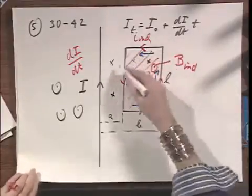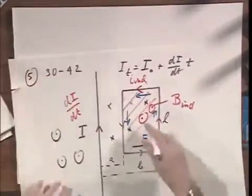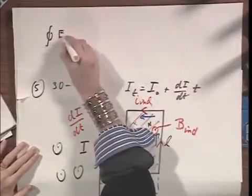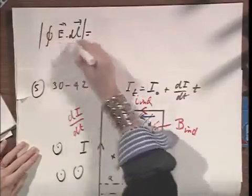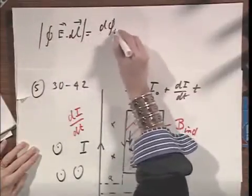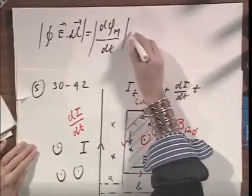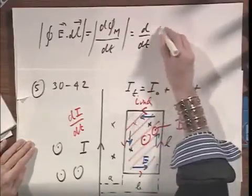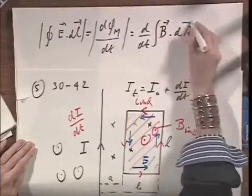To calculate the change of the magnetic flux, we have the closed-loop integral of E dot dL. I'm only worried about magnetic flux, about absolute values. I don't care about minus signs. That is d dt times the integral of B dot dA over that open surface.